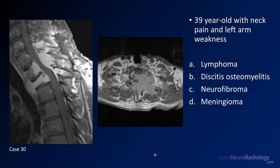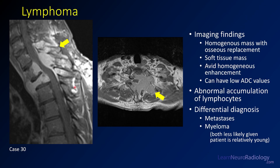Case number 30, our final case: a 39-year-old with neck pain and left arm weakness. Two post-contrast images, sagittal and axial. Choices are lymphoma, discitis osteomyelitis, neurofibroma, or meningioma. The answer is lymphoma. There's homogeneous enhancement involving several vertebral bodies and posterior elements, with extension into the epidural and prevertebral space. There's no significant cystic fluid component, which would be expected with infection. This homogeneous pattern suggests lymphoma or myeloma. Metastatic disease tends to be more rounded and focal. The patient's relatively young age also favors lymphoma; the differential includes metastasis and myeloma.